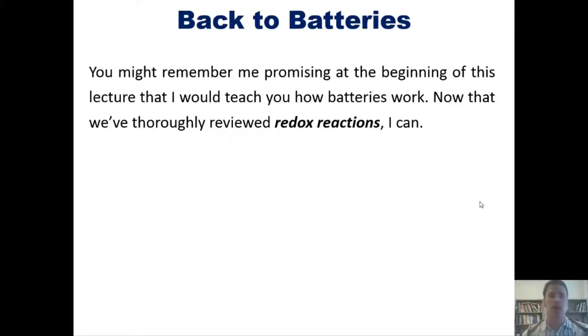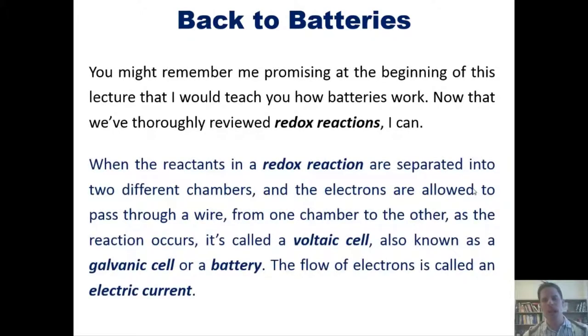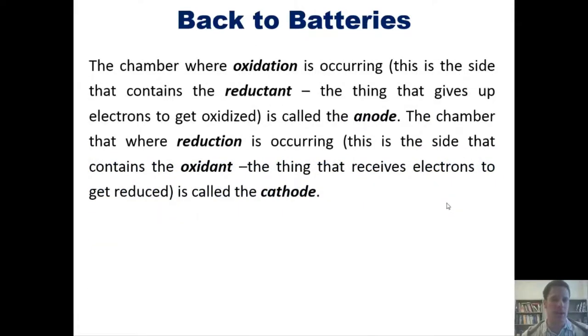So when the reactants in a redox reaction are separated into two different chambers, and the electrons are allowed to pass through a wire from one chamber into another as the reaction occurs, it's called a voltaic cell, also known as a galvanic cell or a battery. The flow of electrons is called an electric current. The chamber where oxidation is occurring—this is the side that contains the reductant—is called the anode, while the chamber where reduction is occurring—the thing that receives electrons to get reduced—is called the cathode.